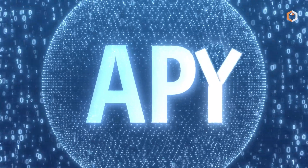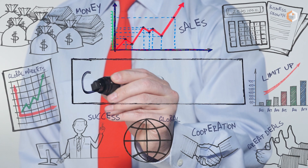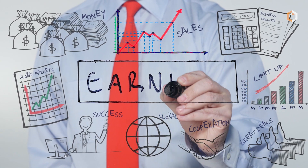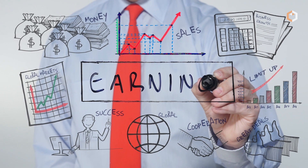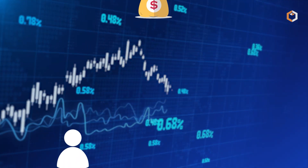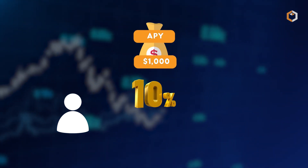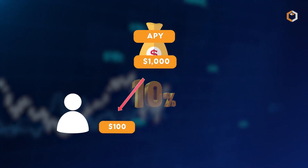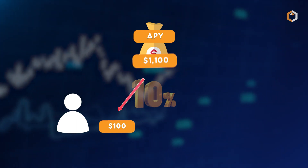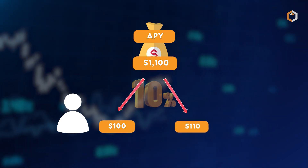APY, on the other hand, takes compounding into account. Compounding is the process of earning interest on the interest earned, which can significantly increase the return on investment or the amount owed on a loan. For example, if you invest $1,000 with an APY of 10%, you'll earn $100 after one year. But after two years, you'll earn 10% of $1,100, which is $110.